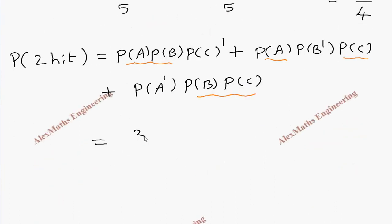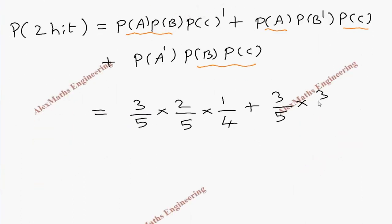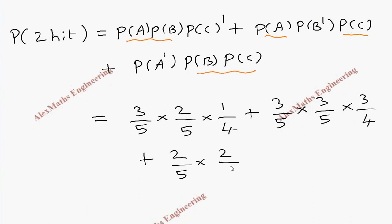So this is 3 by 5 into 2 by 5 into C dash is 1 by 4. Because P of C is 3 by 4, so 1 minus 3 by 4 is 1 by 4. And again this is 3 by 5. And P of B dash we calculated here. This is 3 by 5. And P of C is 3 by 4. Plus P of A dash is 2 by 5. And P of B is 2 by 5. And P of C is 3 by 4.